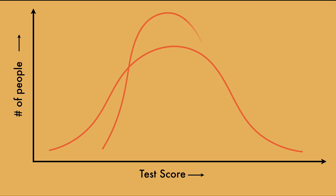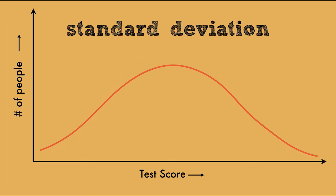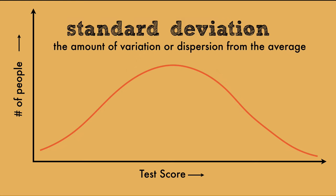Sometimes, most people are in the average, and very few are the outliers. Other times, the curve is flattened, and there are a lot more people who are away from the average. This is standard deviation. It's the amount of variation or dispersion from the average.